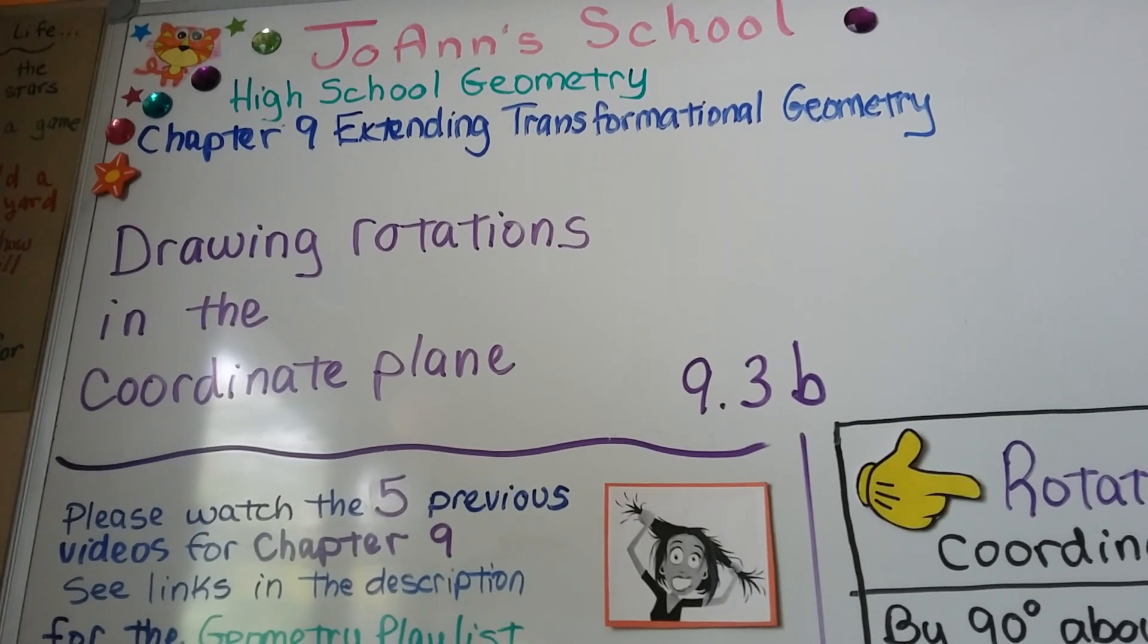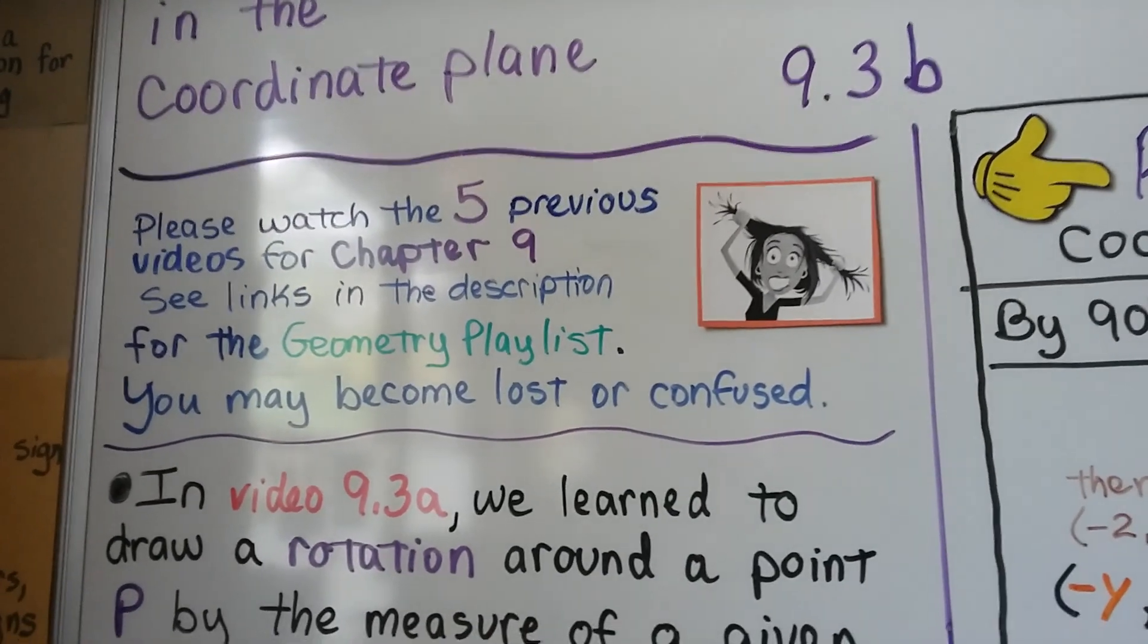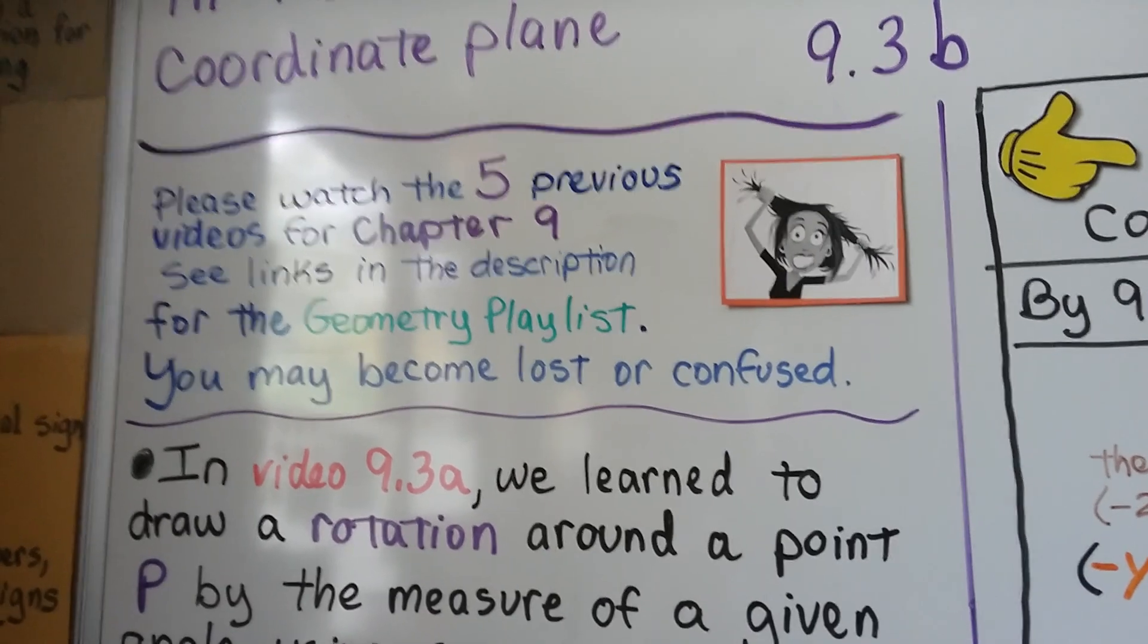Drawing rotations in the coordinate plane, we're at 9.3b, which means we have five previous videos for chapter 9 that you could become lost or confused if you haven't seen them.